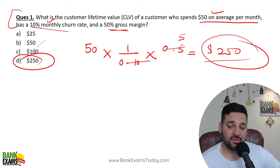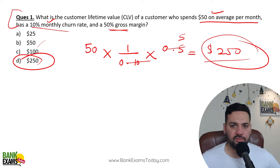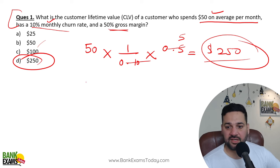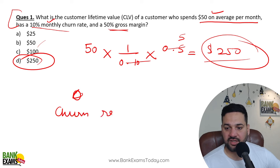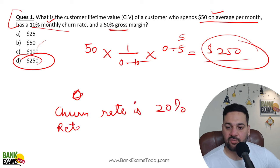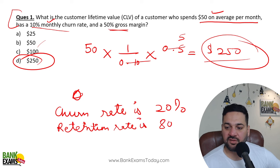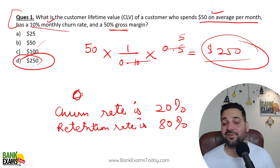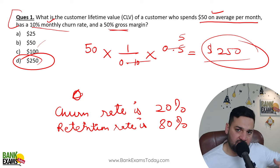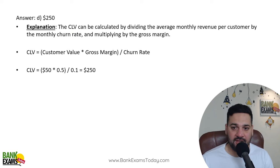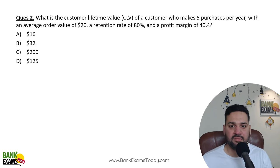Same formula — har question mein use hoga, no need to change the formula. Ek cheez ka dhyan rakhna hai: if churn rate is 20%, retention — jo baaki ke log bache — that is retention rate, which is 80%. If churn rate is 20%, retention rate is 80%. If churn rate is 10%, retention rate is 90%. Jitne log churn ho gae, baaki ke log toh retain ho gae na — that is retention rate.